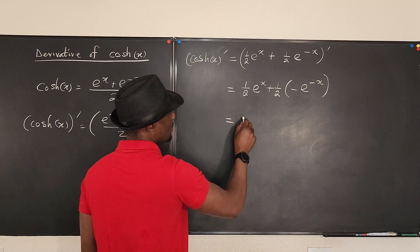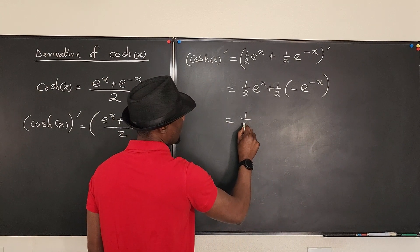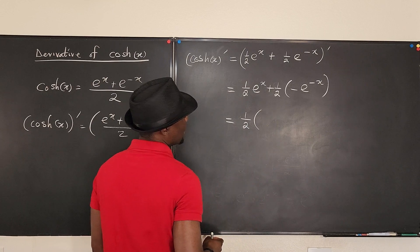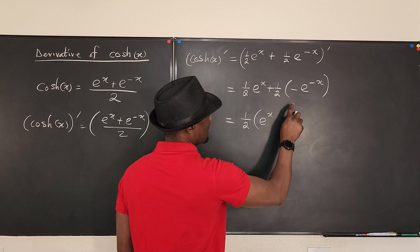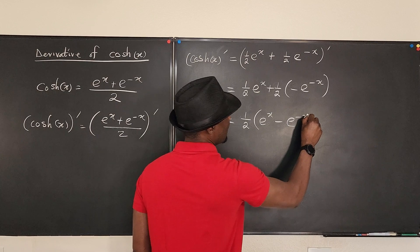This simplifies to, take out the one half, that's one half, and what's left here is e^x minus e^(-x).